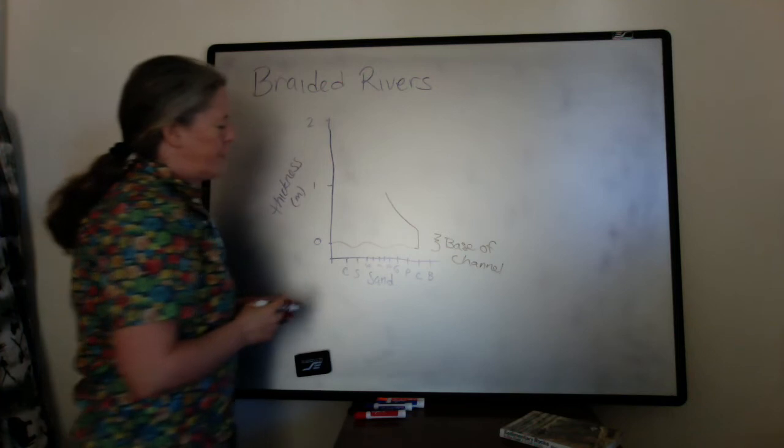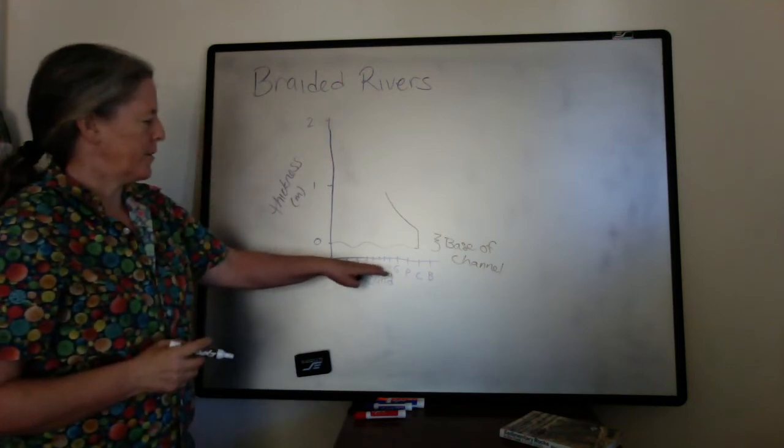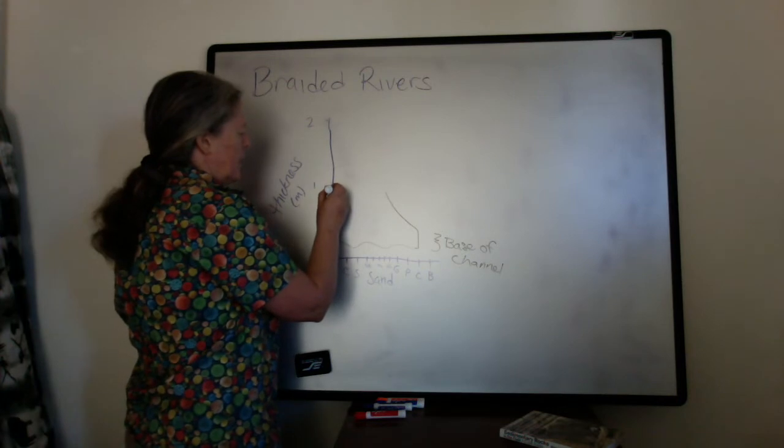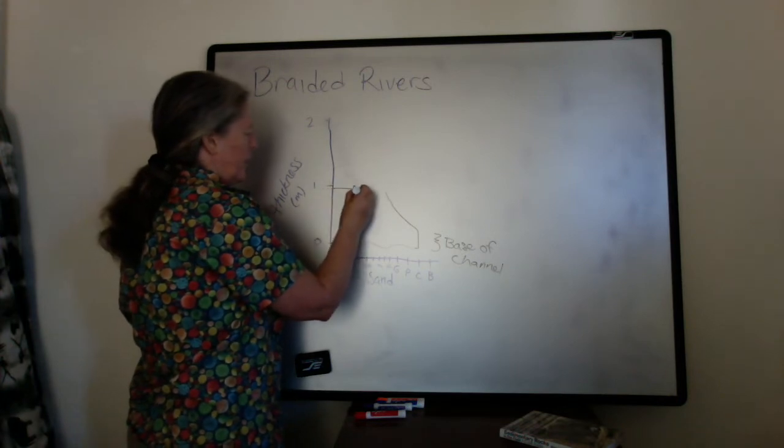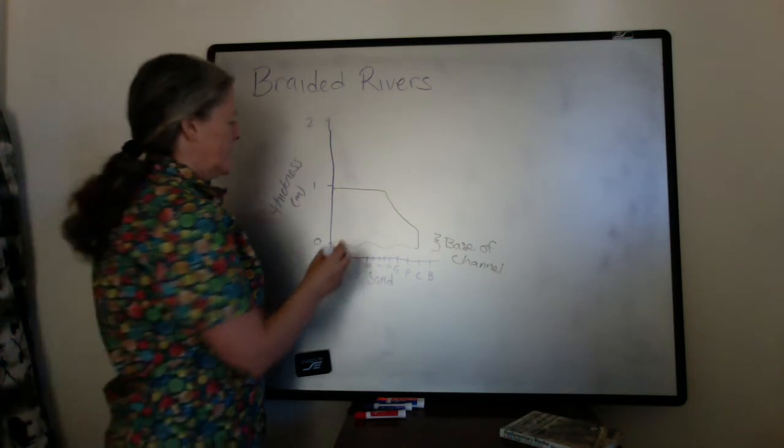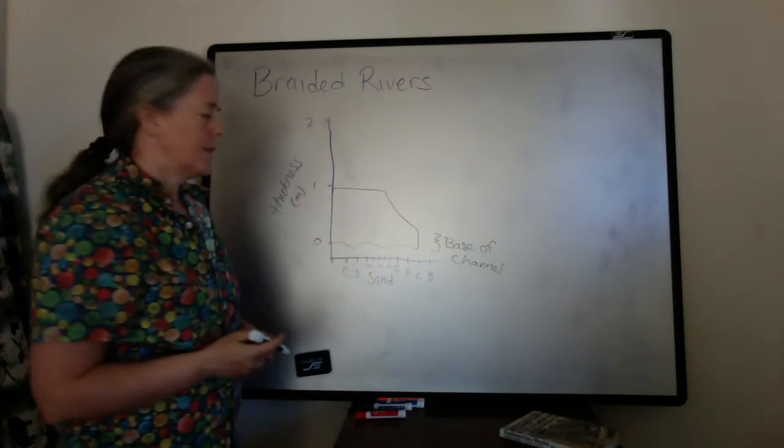Usually the flow is so fast that you might not deposit very much of this finer sand. So we'll make ours end and it looks like about coarse sand.